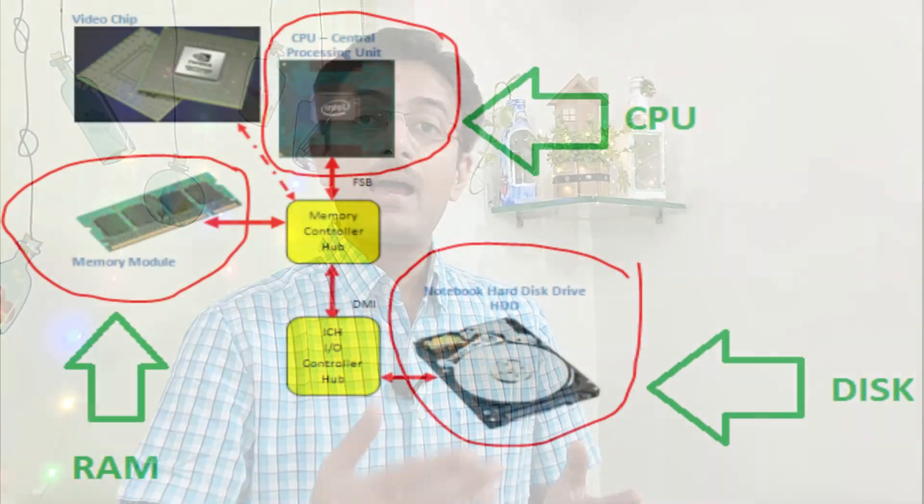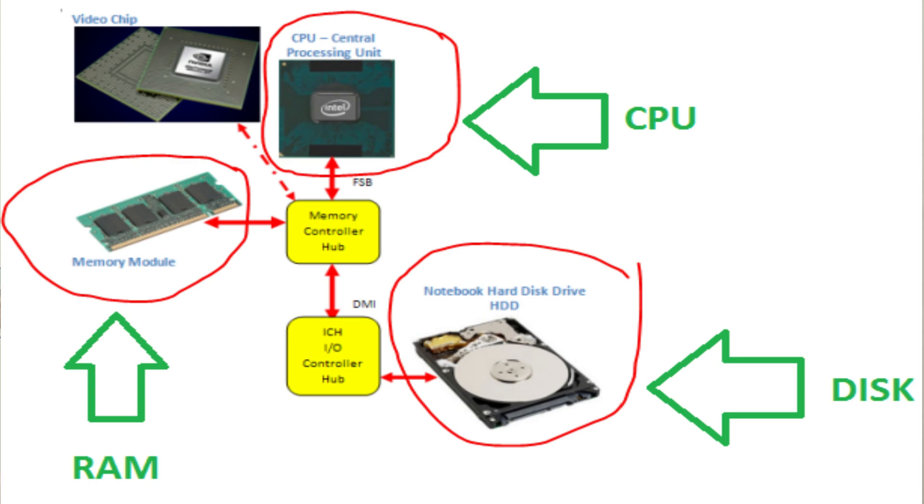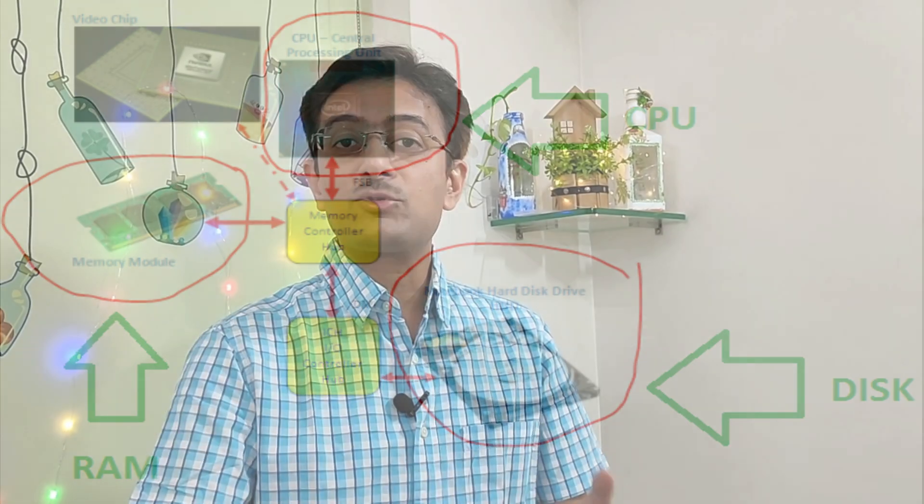But if you want a speed boost for general purpose use, then you have to increase the RAM and the CPU. However, as I mentioned, you sometimes can't change the processor because the motherboard design is a limitation. So the first thing you need to do is change the RAM.